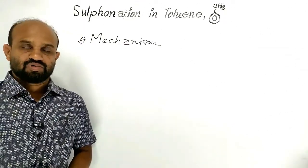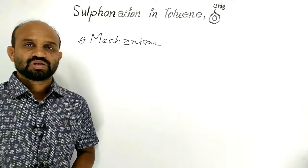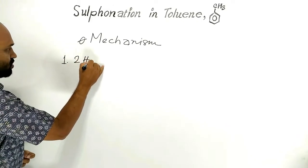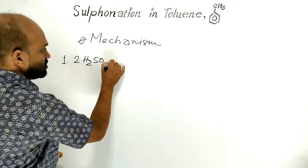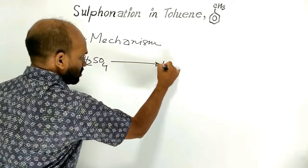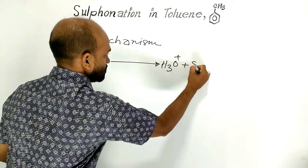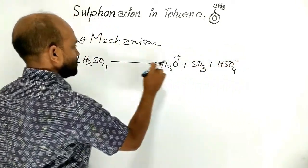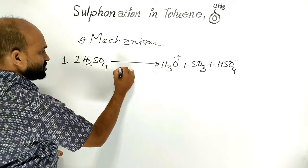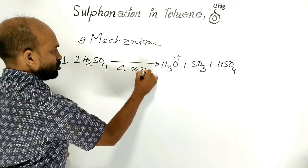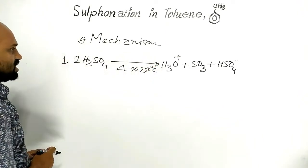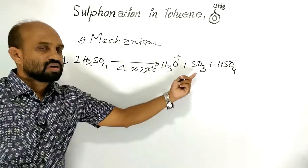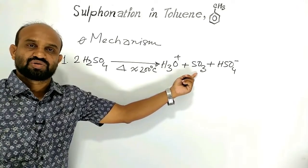Let's look at the mechanism of sulfonation step by step. Step 1: two molecules of sulfuric acid produce a hydronium ion, a sulfur trioxide electrophile, and a bisulfate ion at high temperature — around 200 degrees Celsius. At this step, two sulfuric acid molecules participate.